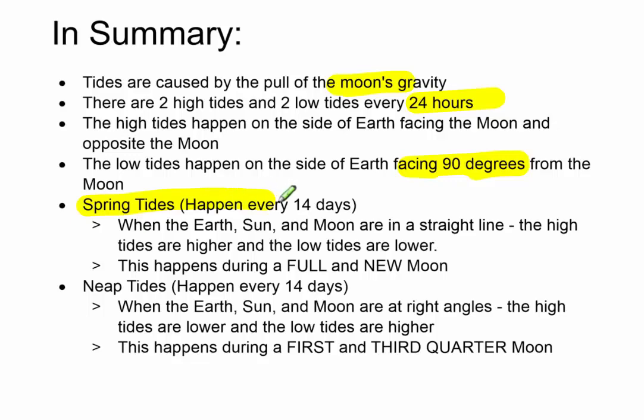Spring tides happen every 14 days. So people think they happen just in the spring. That's only because of the name. I'm not sure why they named it that. But they happen every 14 days, whenever we have a full and a new moon. Now what happens there, the earth and the sun and the moon are all working together. Their gravity is all lined up in a straight line. So you have the highest high tides you're ever going to have and the lowest low tides you're ever going to have.